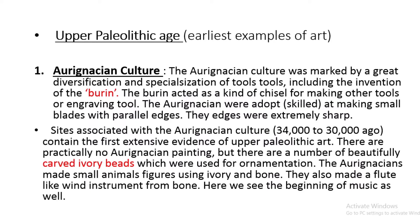Aurignacian culture sites contained the first extensive evidence of Upper Paleolithic art. There are practically no Aurignacian paintings, but there are a number of beautifully carved ivory beads used for ornamentation. Aurignacians also made small animal figures from ivory and bone, and a flute-like wind instrument from bone — marking the beginning of music.